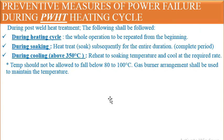Preventive measures during PWHT power failure: if the power fails during the heating cycle, the whole operation must be repeated from the beginning. If the failure occurs during soaking, the treatment must be repeated for the entire duration. If the failure occurs during cooling, reheat to the soaking temperature and cool again at the required rate.